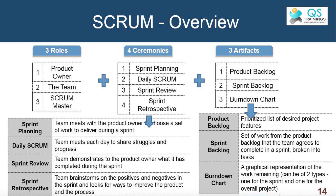Then we have three artifacts. The product backlog is a prioritized list of requirements maintained by the product owner. The sprint backlog is a subset of the product backlog decided on the first day of the sprint after the sprint planning meeting. And then we have the burndown chart.